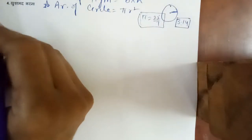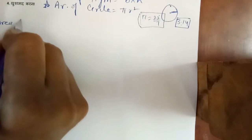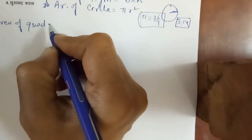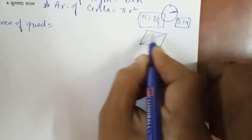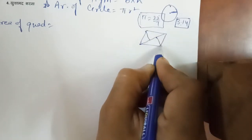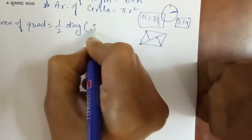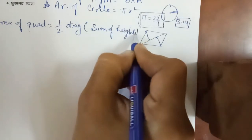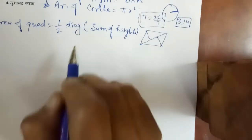Next formula is area of quadrilateral. If we are given two heights and a diagonal — means जैसे एक quadrilateral दिया हुआ है, उसमें diagonal दिया हुआ है और दो heights दी हुई हैं — तो इसके according formula है: half of diagonal multiply by sum of the two perpendicular heights. जिस diagonal के ऊपर ये दोनों दी हुई हैं वो हमें use करना है.